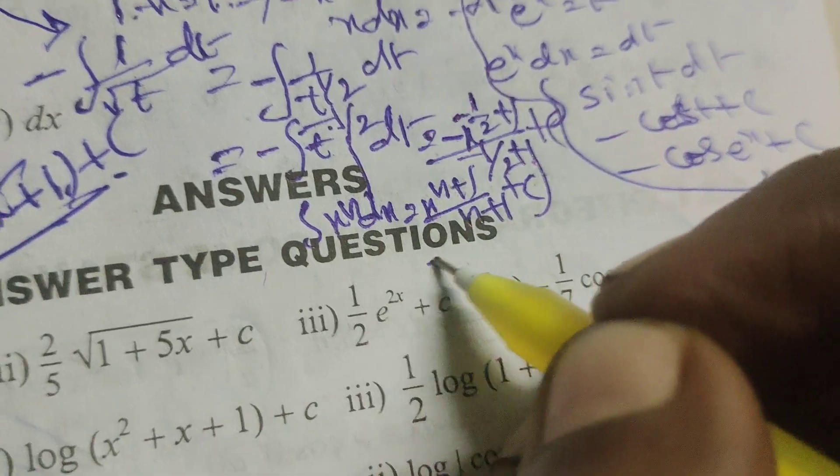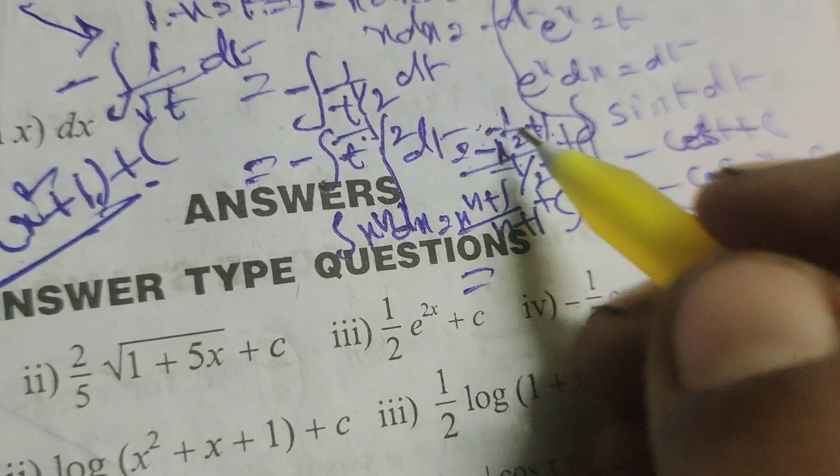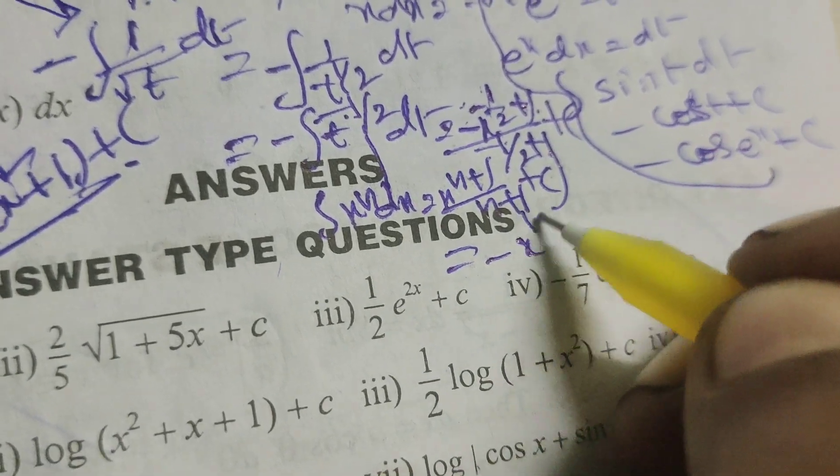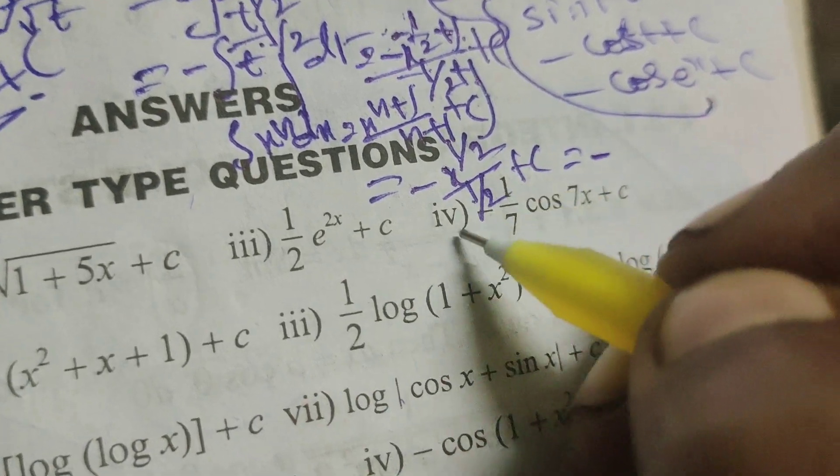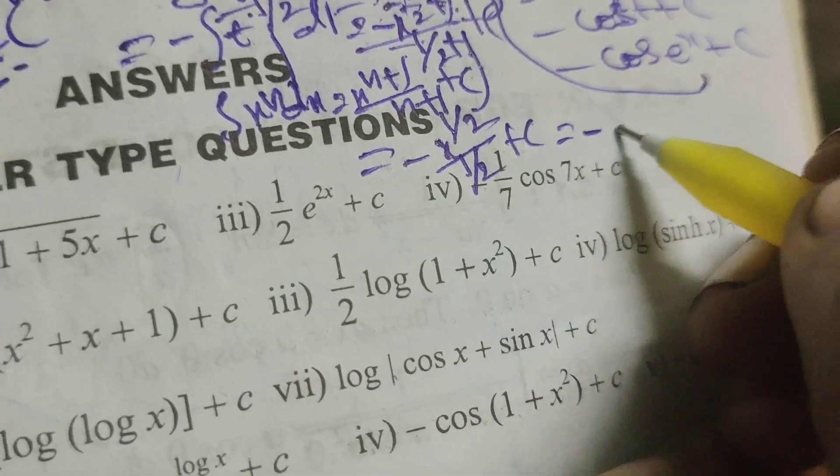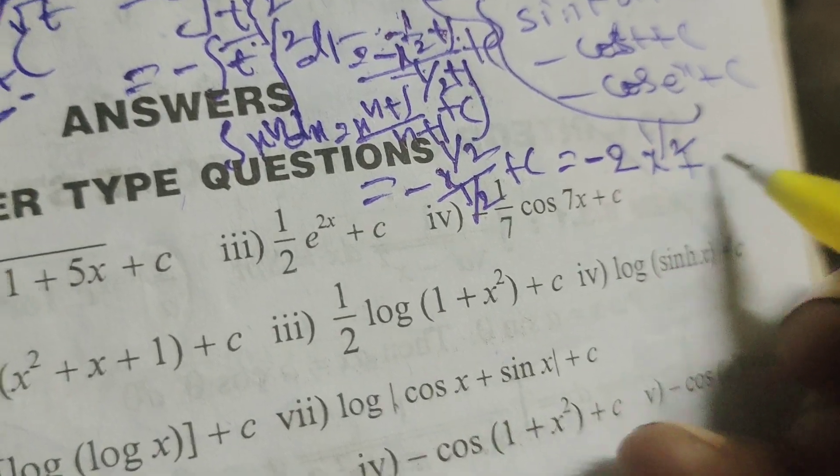Now simplify this: minus 1 by 2 plus 1, minus 1 plus 2, that is plus 1 by 2. So minus t power plus 1 by 2 by 1 by 2 plus c. Next write minus, this denominator 1 by 2 goes up: minus 2 t power 1 by 2 plus c.